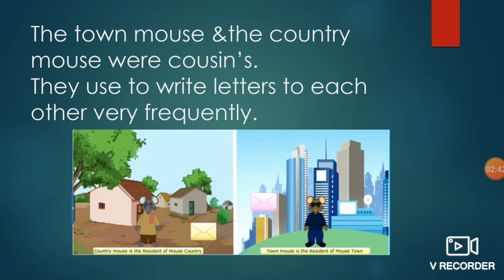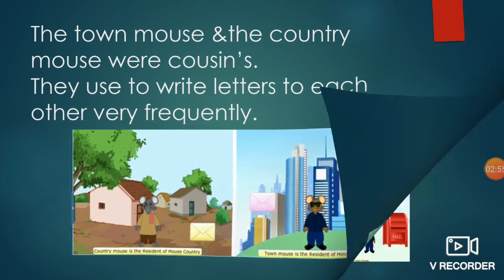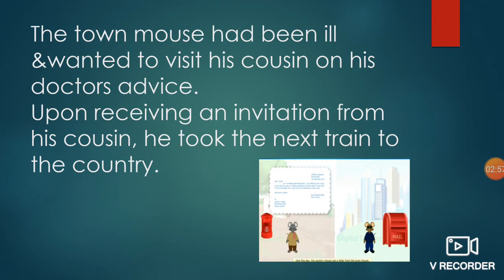In this story, there are two mice — the town mouse and the country mouse — who are cousins. They used to write letters to each other very frequently. The town mouse had been ill and wanted to visit his cousin on his doctor's advice. Upon receiving an invitation from his cousin, he took the next train to the country.